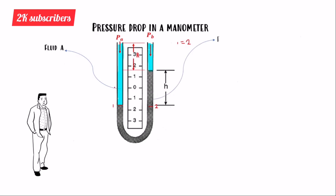Now we move to the calculation. Using the principle that pressure at point one equals pressure at point two, and knowing that pressure increases with depth and pressures at the same level are equal, we equate the pressure expressions at both points to find the pressure drop.